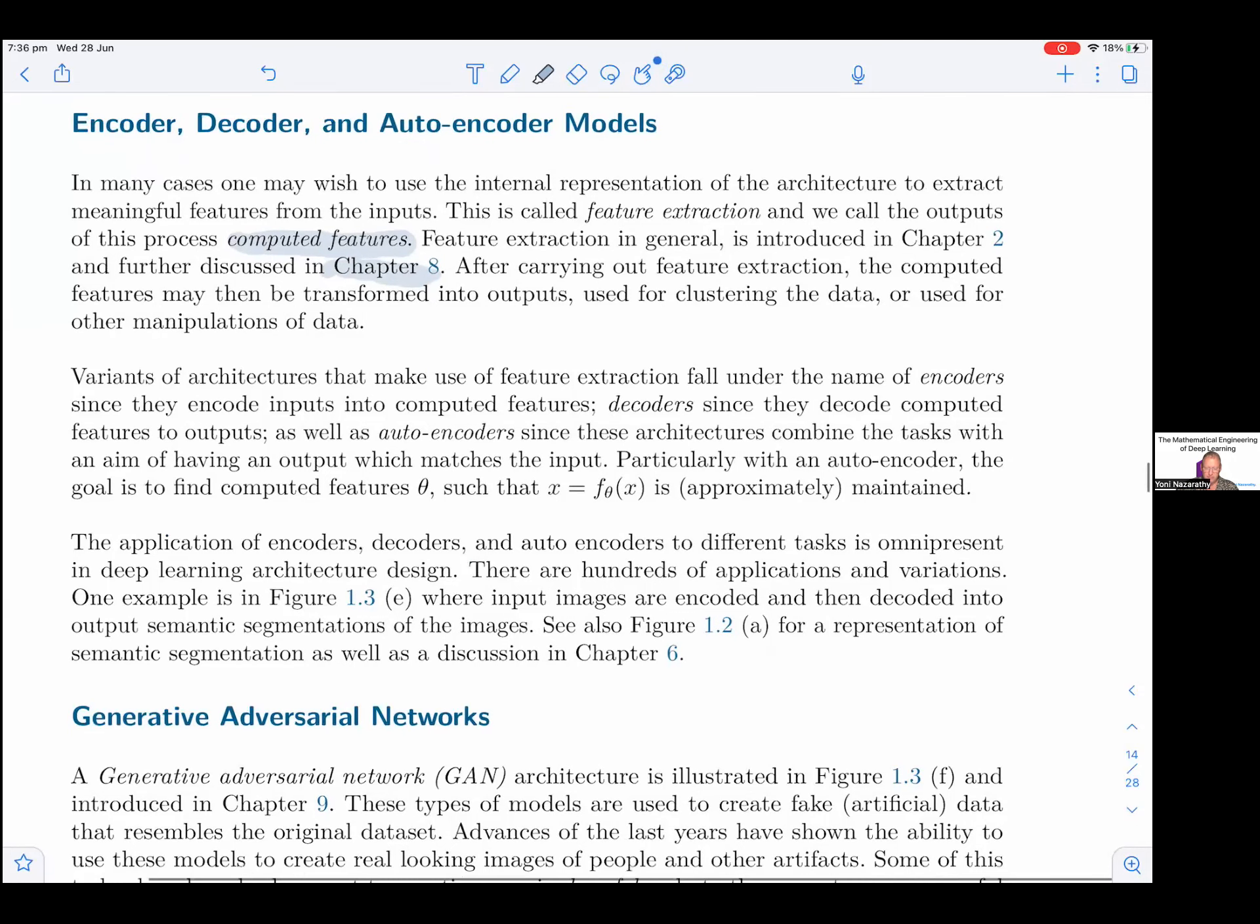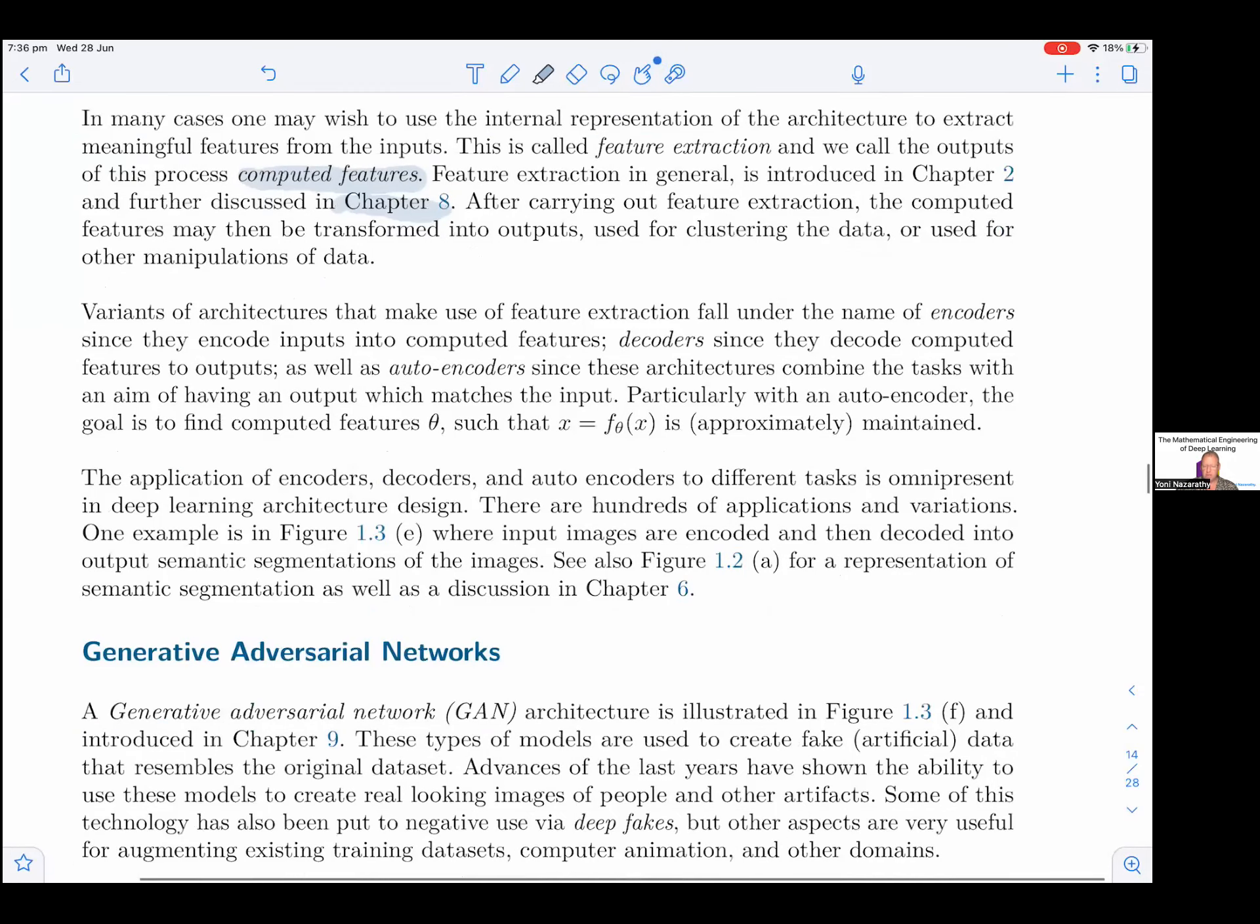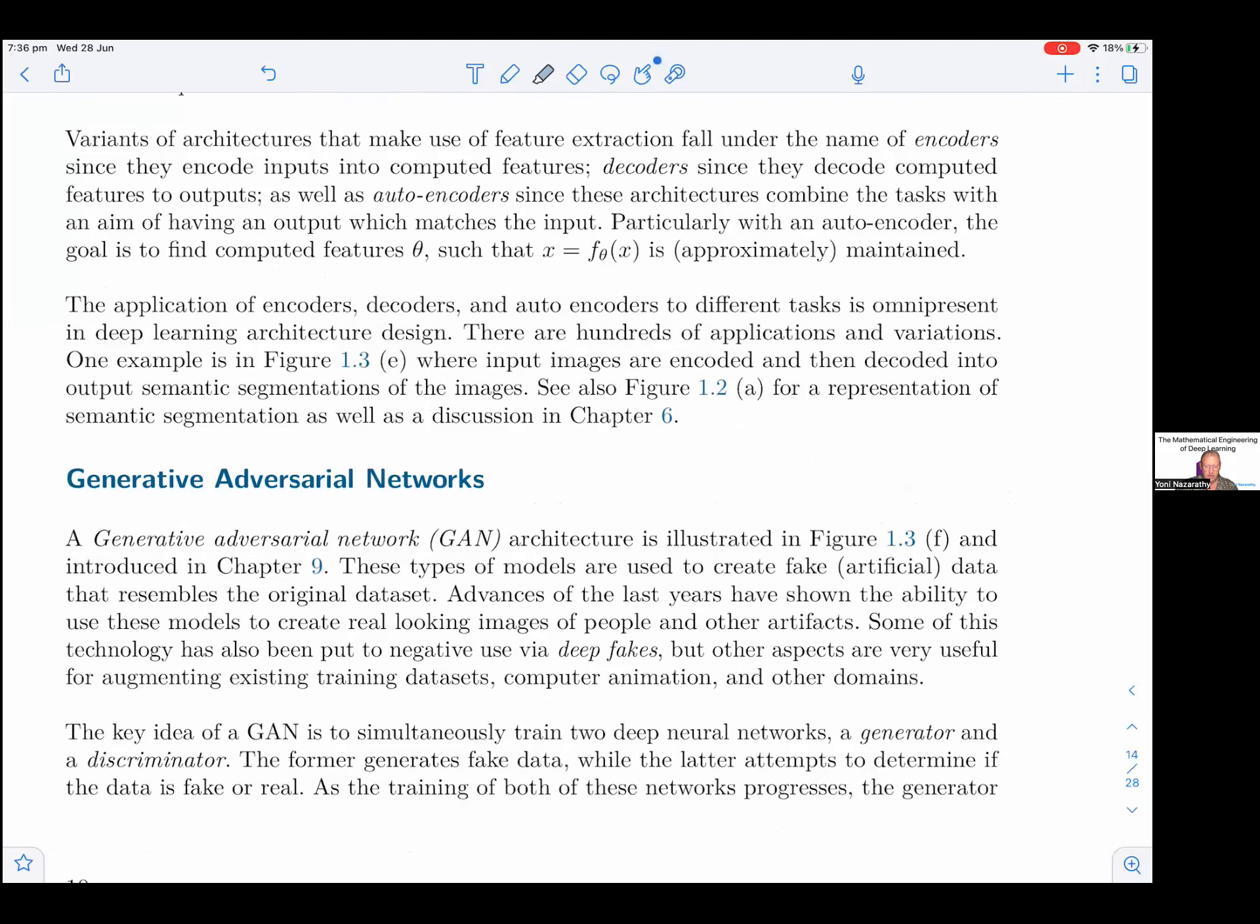Variants of architectures that make use of feature extraction fall under the name of encoders since they encode input into computed features, decoders since they decode computed features to output, as well as autoencoders since these architectures combine the tasks with an aim of having an output which matches input. Particularly, with an autoencoder, the goal is to find computed features theta such that x equals f theta of x is approximately maintained. So basically, we're trying to learn the identity function approximately and find the parameters that make this identity function.